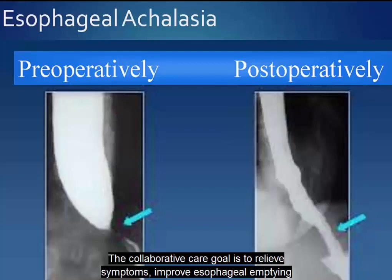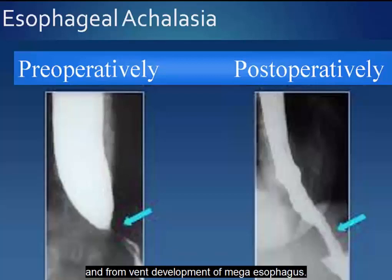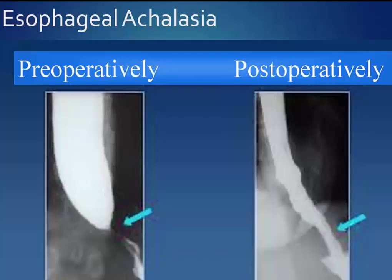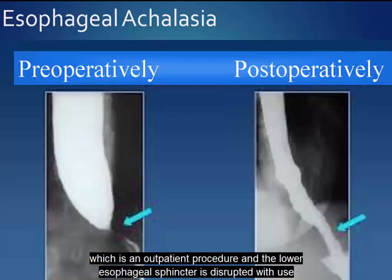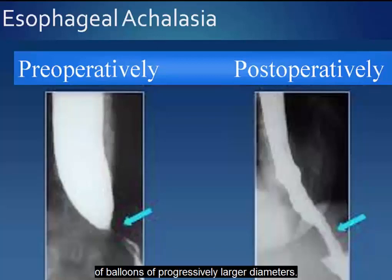The collaborative care goal is to relieve symptoms, improve esophageal emptying, and prevent development of megaesophagus. Endoscopic pneumatic dilation can be done as an outpatient procedure where the lower esophageal sphincter is disrupted with balloons of progressively larger diameters. Repeat dilations are often required.